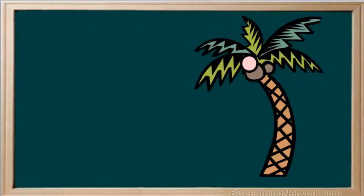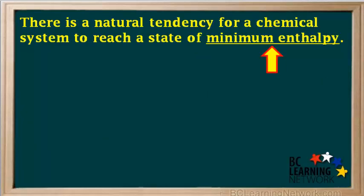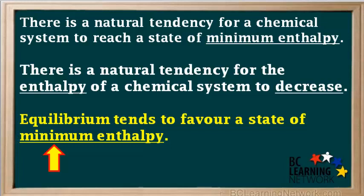Think of a coconut in a tree. If it's released, there's a natural tendency for it to fall downward in order to reach a state of minimum gravitational potential energy. In a gravitational field, there's a natural tendency for objects to reach a state of minimum potential energy. Now consider a chemical system. There's a natural tendency for chemical systems to reach a state of minimum enthalpy. We could also state that equilibrium tends to favor a state of minimum enthalpy.